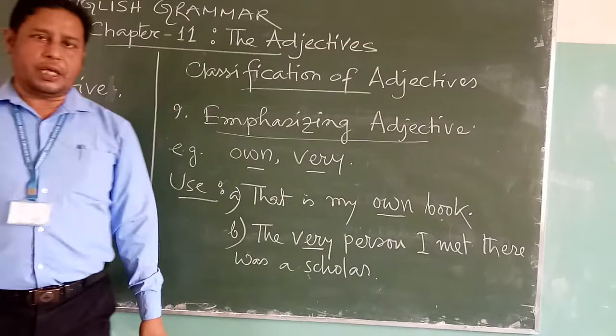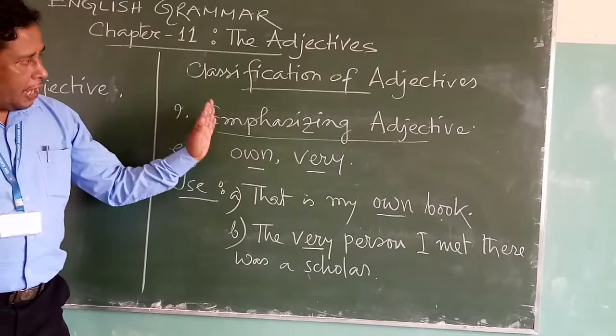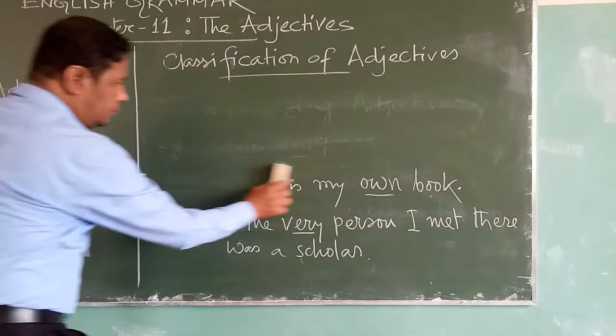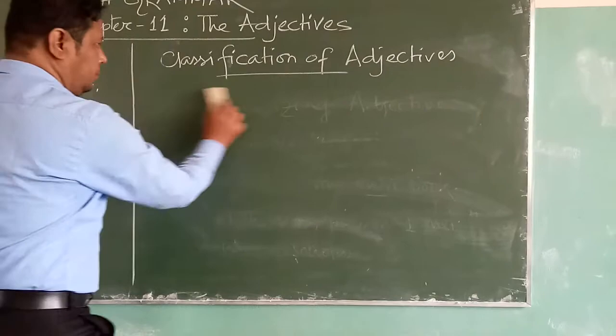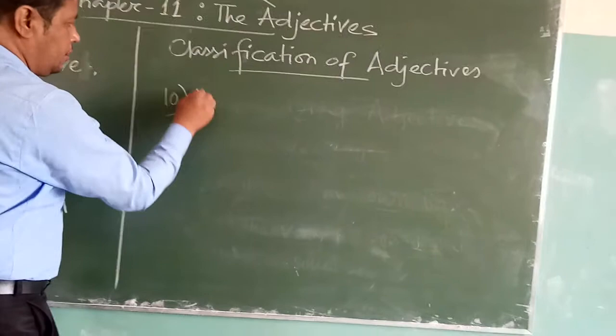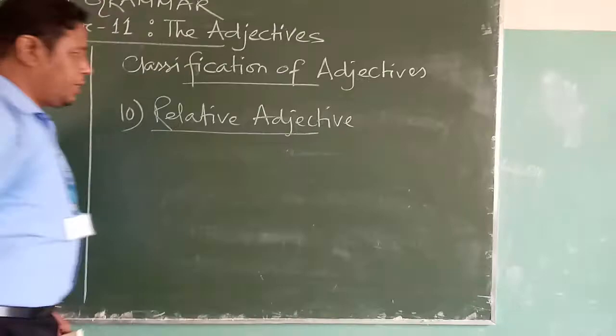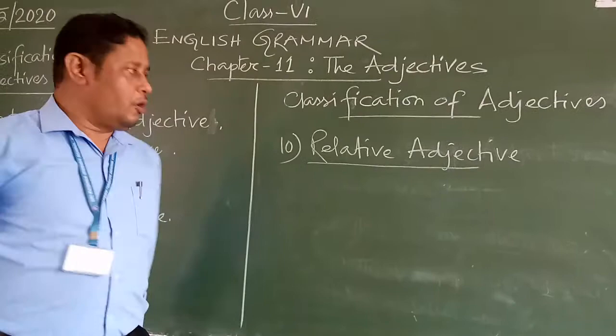This type is also not given in many books, but you need to understand it. This is the ninth type — emphasizing adjective. Now I am going to explain the last one, which is number ten: the relative adjective. A relative adjective is the adjective that introduces a relative clause, similar to how a relative pronoun works.